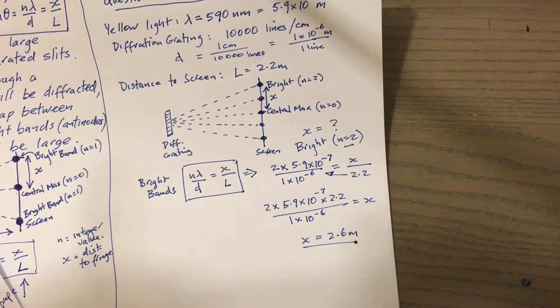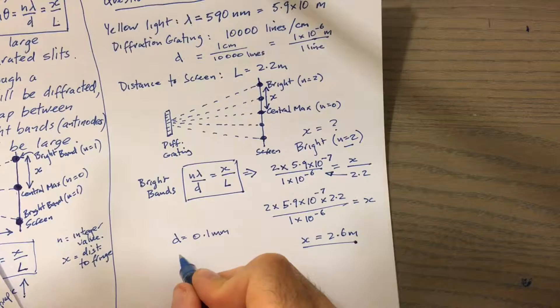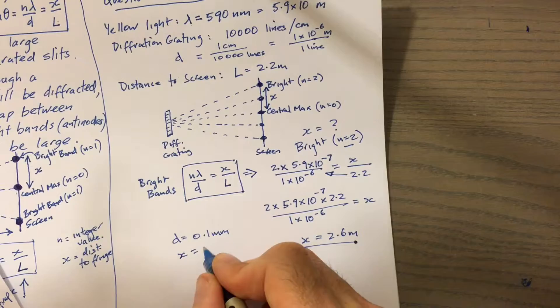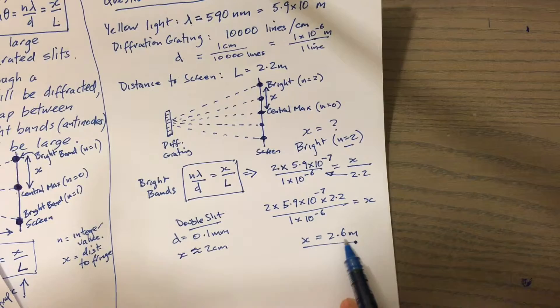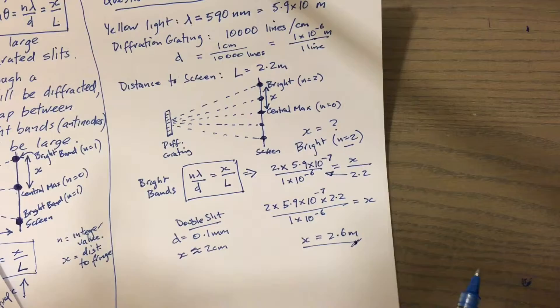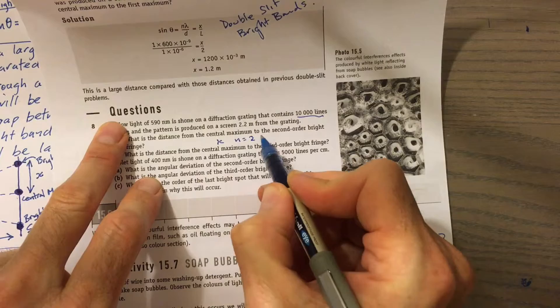Now you can see that's a significant distance compared to what we had with double slit diffraction, where the separation between the slits was something more like 0.1 of a millimeter. If that was d, we were seeing x to the first or second bright band in the order of maybe a couple of centimeters. Whereas here, because d is so small, we find that x is significantly larger. So I might stop there, that was just part a, where we had to find x for n equal to 2.